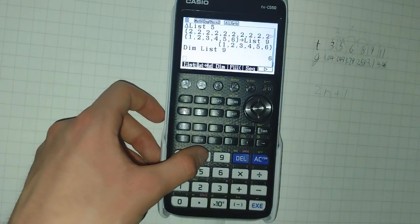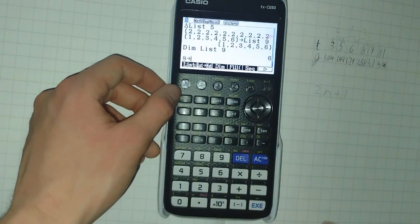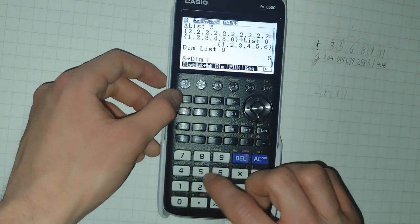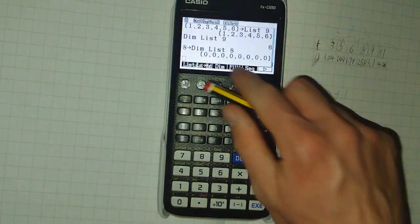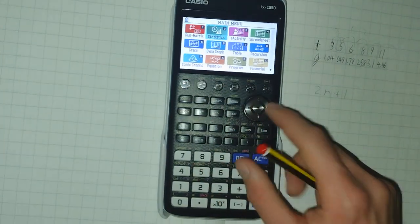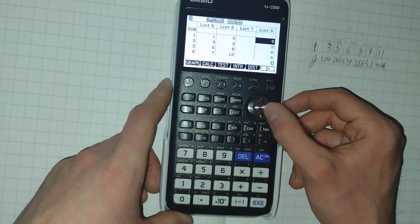So to demonstrate, let's say I want to create an eight element list. I click eight, arrow, dim, list eight. And it's now created an eight element list, all containing zeros in list eight.